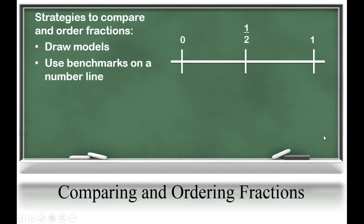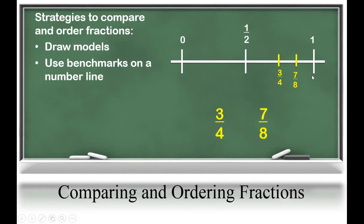Let's try another example: three-fourths and seven-eighths. I know that two is half of four, so three-fourths is greater than one-half. Seven-eighths is also greater than one-half. So now students need a strategy to figure out which one is greater. In this case, we can look at the size of the missing piece. Three-fourths is missing one-fourth to get to one whole. Seven-eighths is missing one-eighth to get to one whole. Students should know that one-fourth is a larger piece than one-eighth, so seven-eighths is actually closer to one whole — it is the greater fraction. This type of reasoning can help students when both fractions are greater than one-half.